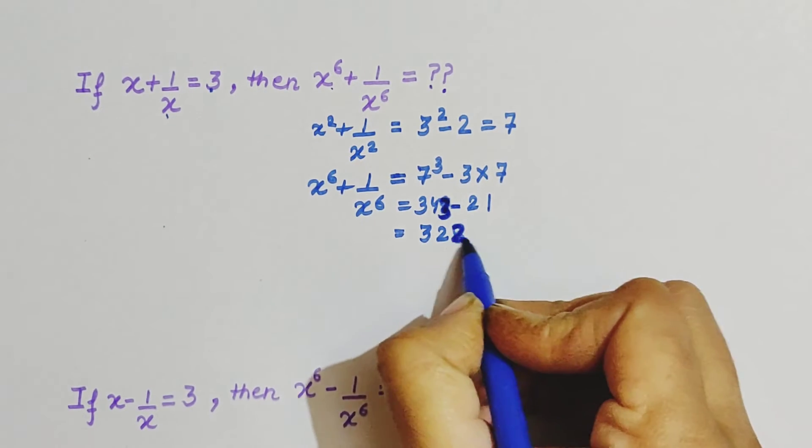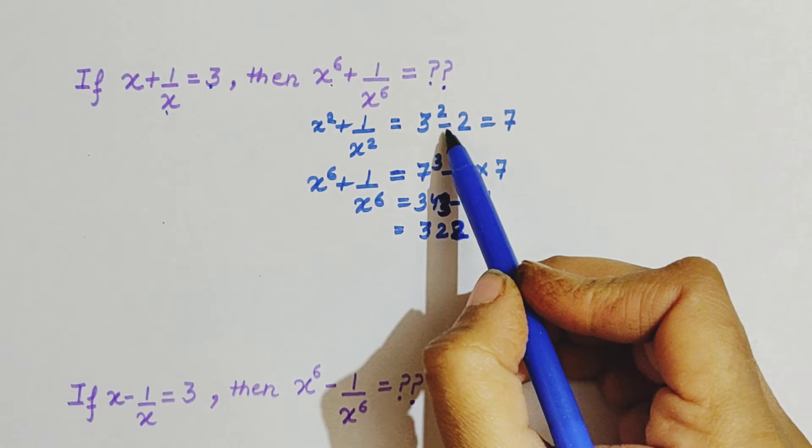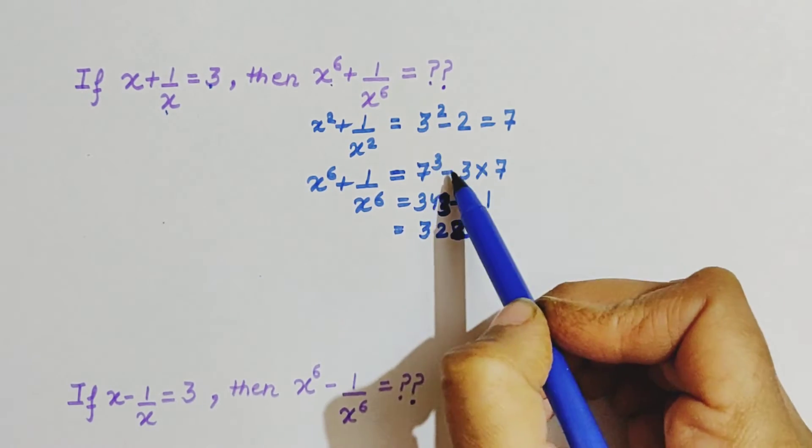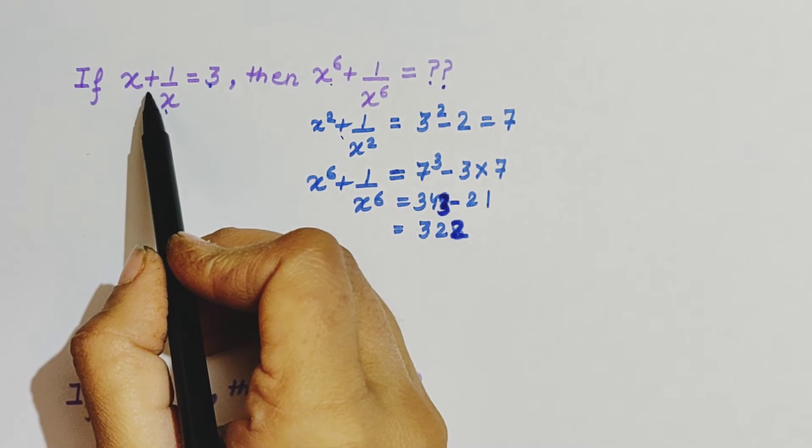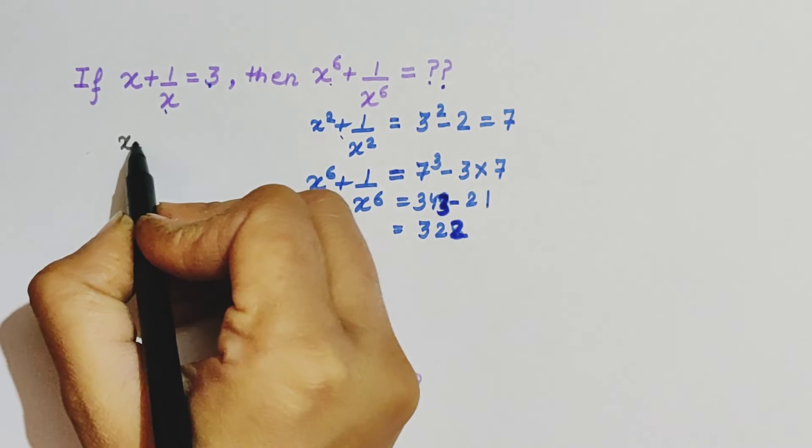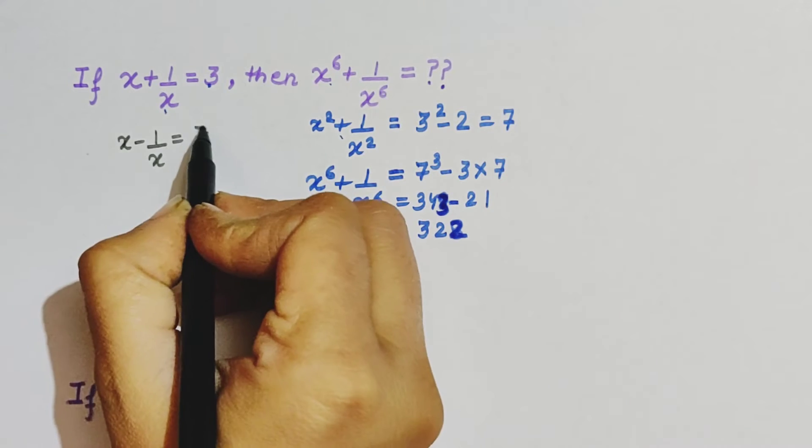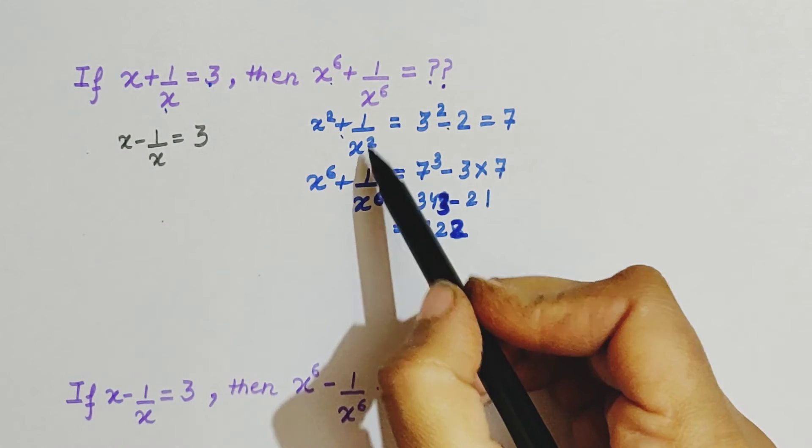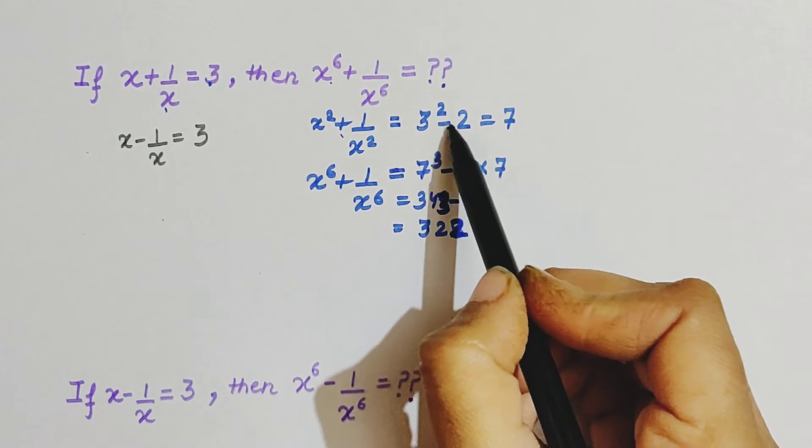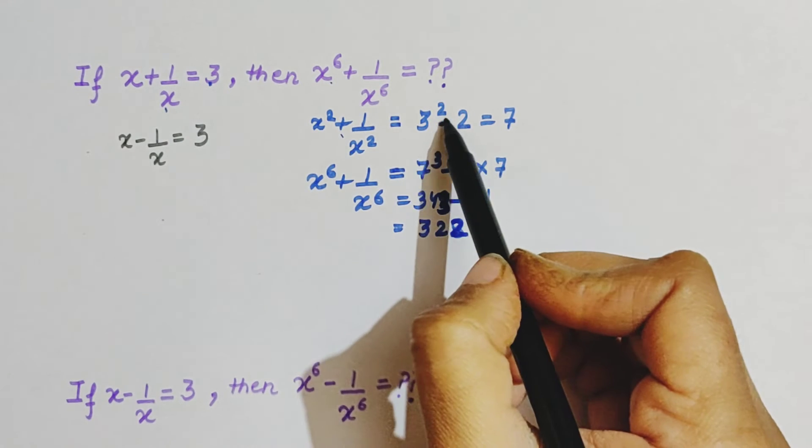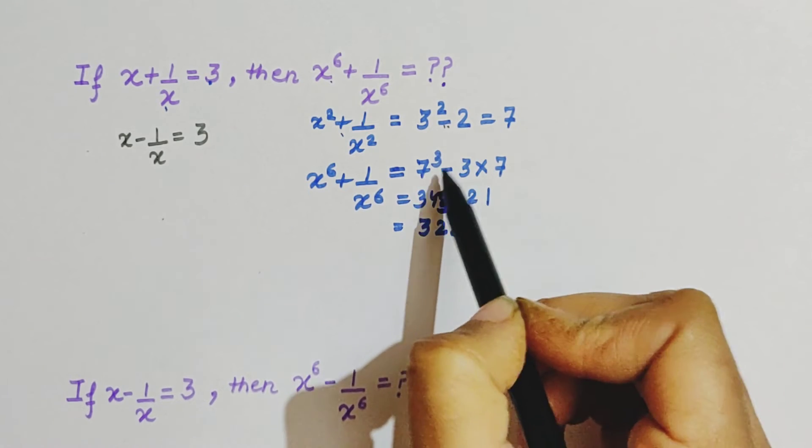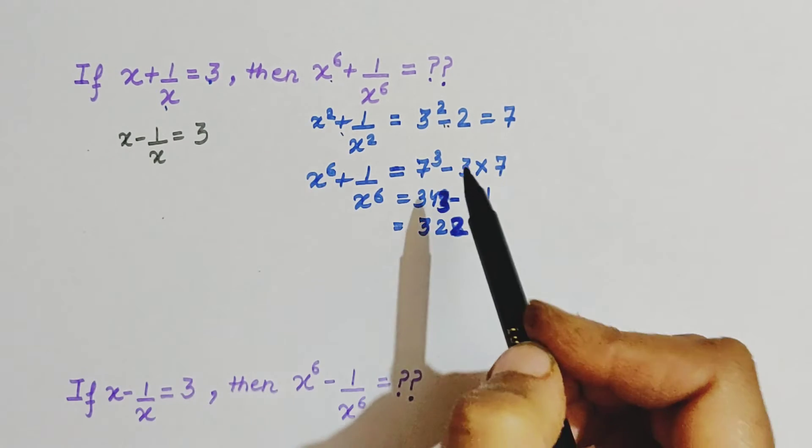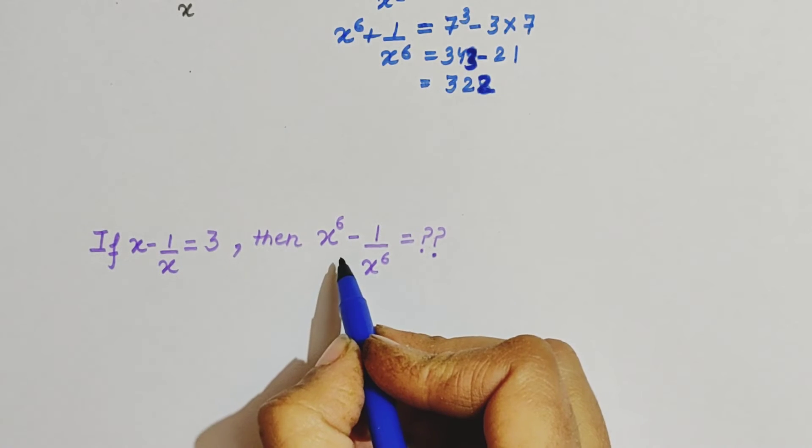Here observe that in the given equation there was a plus sign. It can also happen that you are given a minus. Then what happens? Your technique will be the same, simply the signs will change. This I have discussed in detail in my last two videos, how we take the sign here by looking at the given equation sign.